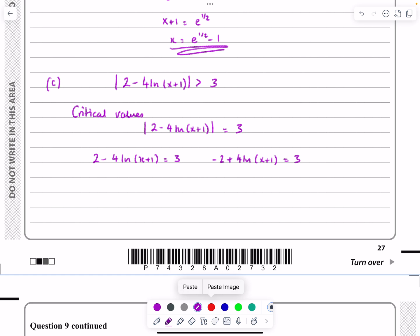On the left-hand side, I will get minus 1 equals 4 ln(x+1). I'll get ln(x+1) equals minus 1 quarter. E both sides. x plus 1 is going to equal e to the minus 1 quarter. So x is going to be e to the minus 1 quarter minus 1.